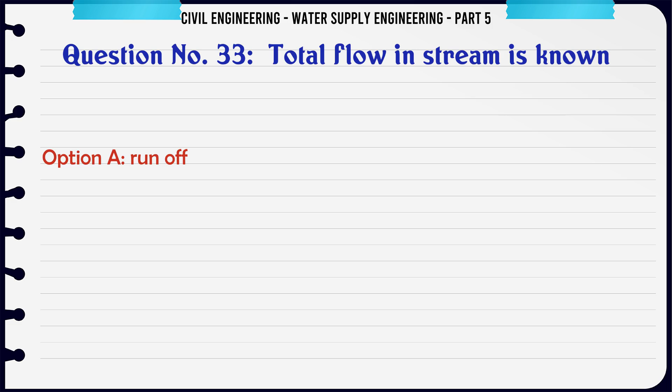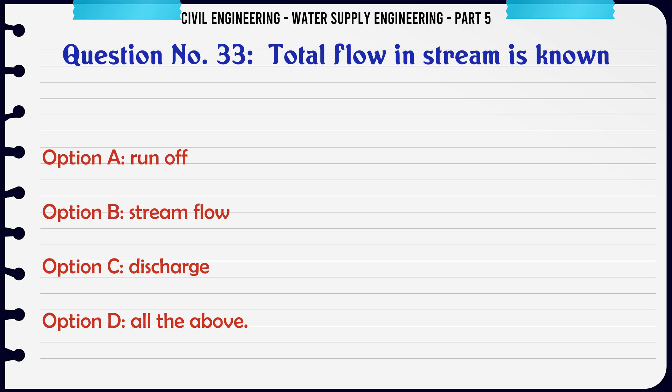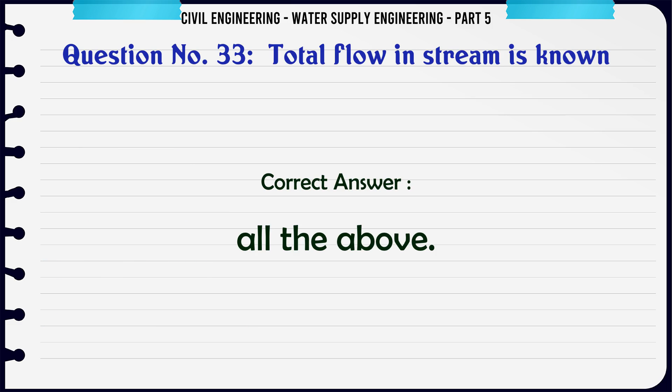Total flow in a stream is known as: A. Runoff, B. Stream flow, C. Discharge, D. All the above. The correct answer is All the above.